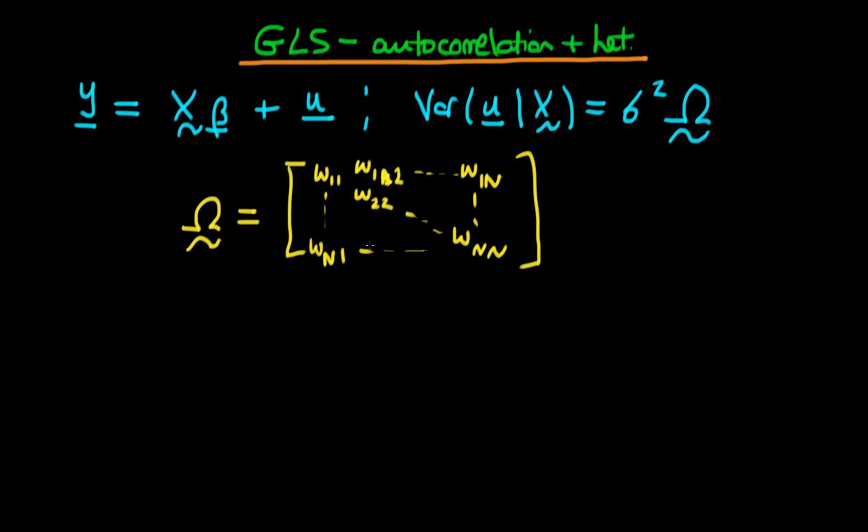The main message here is that omega isn't a diagonal matrix. That means we have heteroscedasticity because I haven't necessarily assumed that the diagonal components are the same as one another. In other words, I've got omega 1-1, omega 2-2, and I haven't assumed that omega 1-1 equals omega 2-2 equals omega n-n.